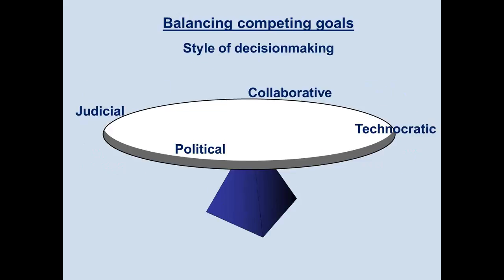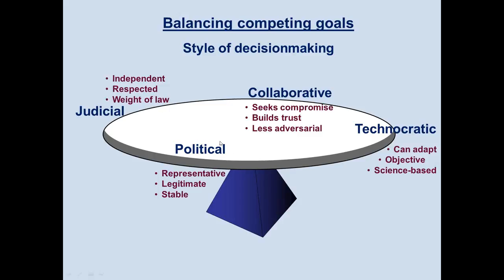There's also an interplay between different styles of decision making. First, political decision making — made by elected representatives — is representative, has legitimacy, and once a law is passed it has stability. Second, technocratic decision making — by experts within agencies — is objective and science-based, somewhat adaptable; regulations are easier to change than laws if they're not working.